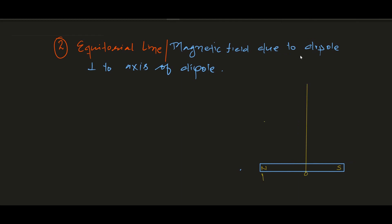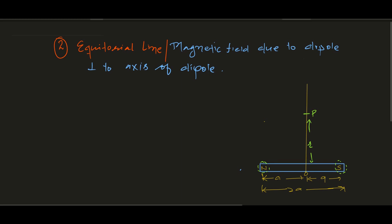Let this be the center of the dipole. This separation is 'a' and this separation is again 'a', so the total separation from one pole to the other is 2a. Remember this fact. Now I have to calculate the magnetic field at any point along this axis. Let this point be P, and the distance from the center to point P is r, as we did yesterday.